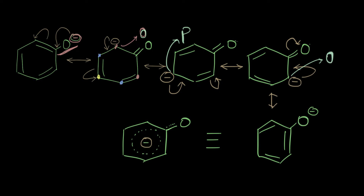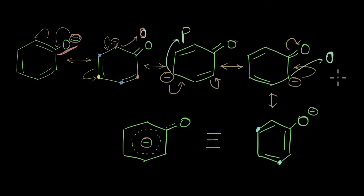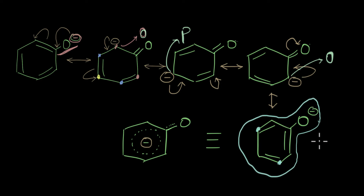This gives us the idea that the meta positions in phenoxide ion do not become electron-rich because the negative charge never falls on those two positions. In the following video we'll check how this affects the acidic strength of phenol derivatives. There is extended delocalization of electrons from the oxygen atom to the entire benzene ring, making this molecule a pretty stable entity.